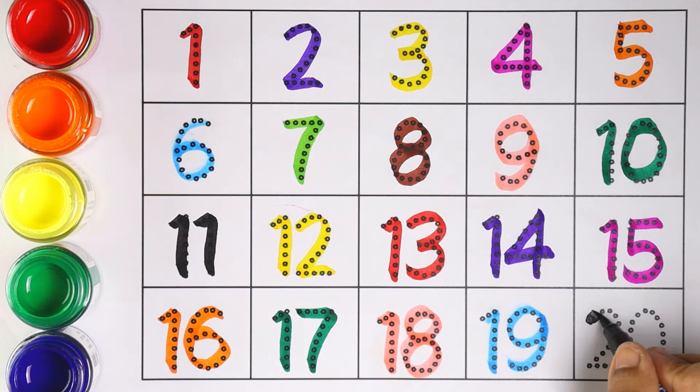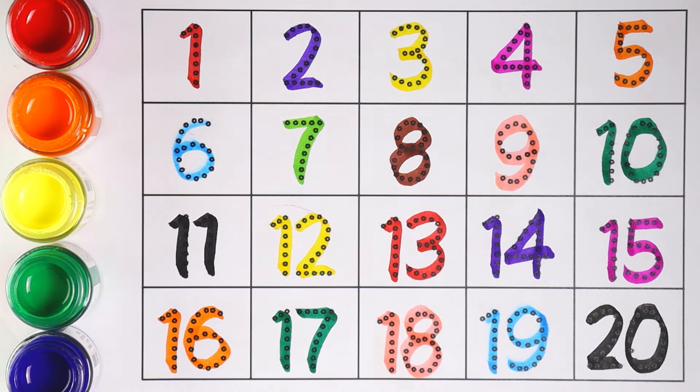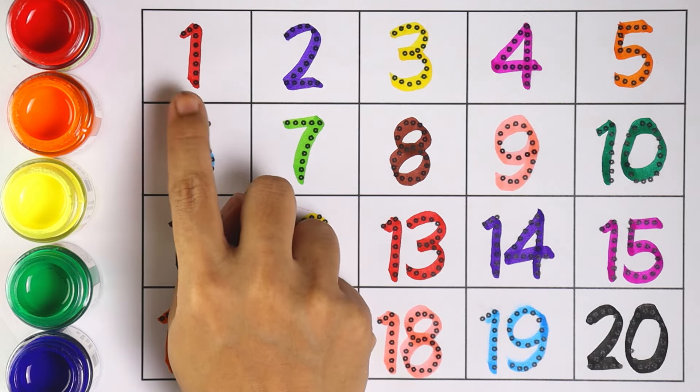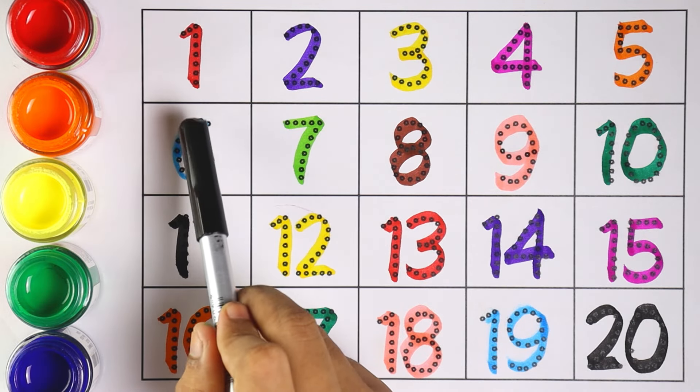Number 20. 2 and 0 makes the number 20. Very good. Now, shall we all count from 1 to 20? Are you ready? Let's start.